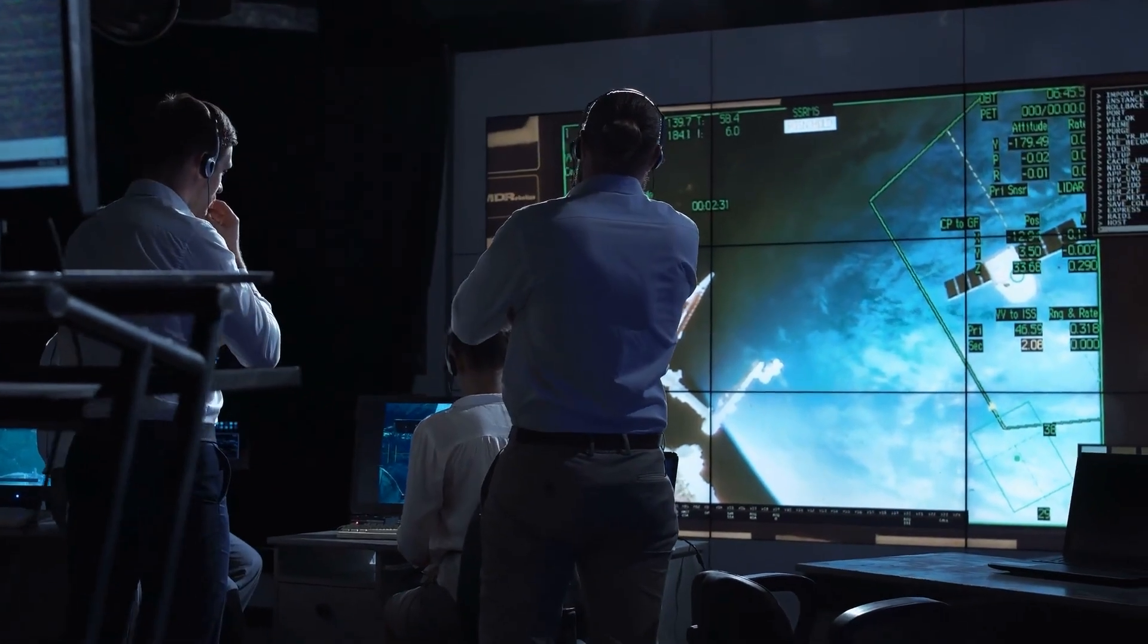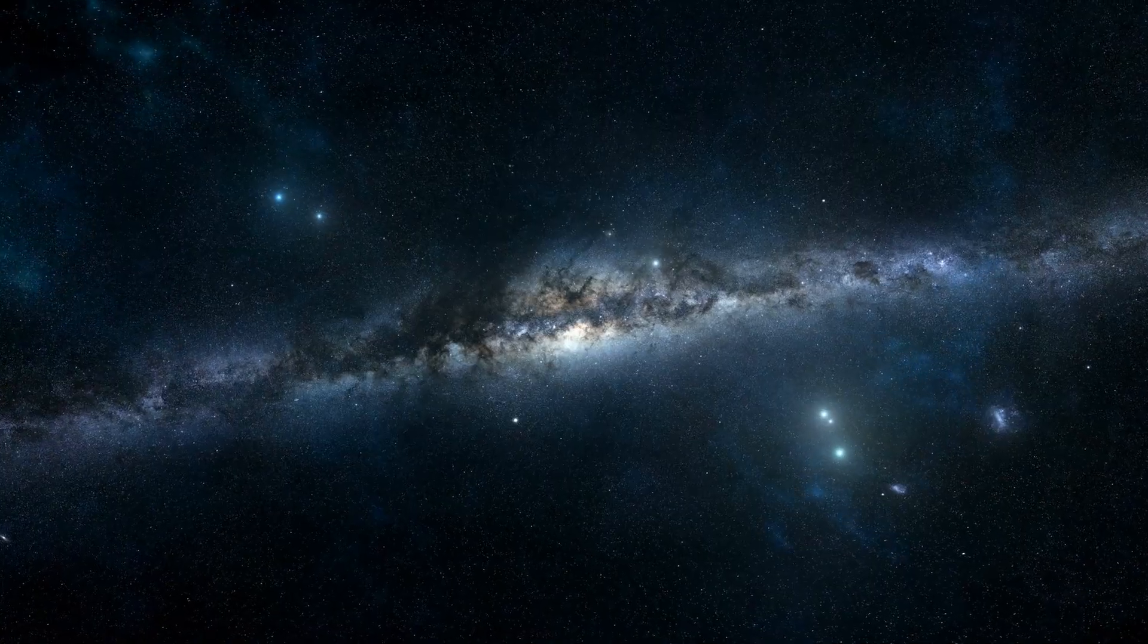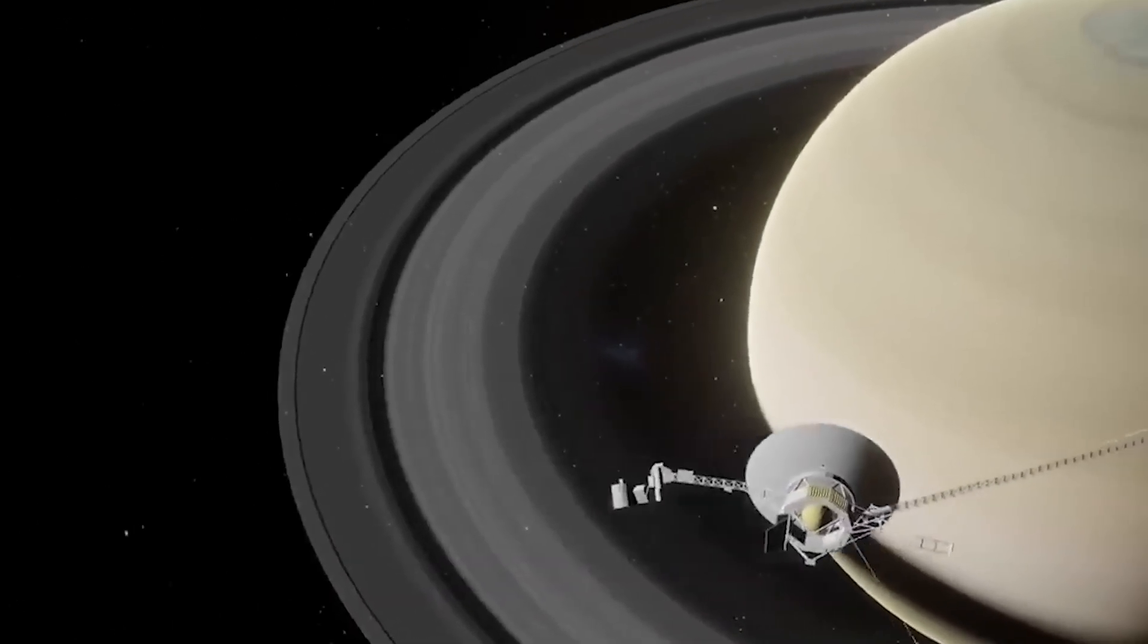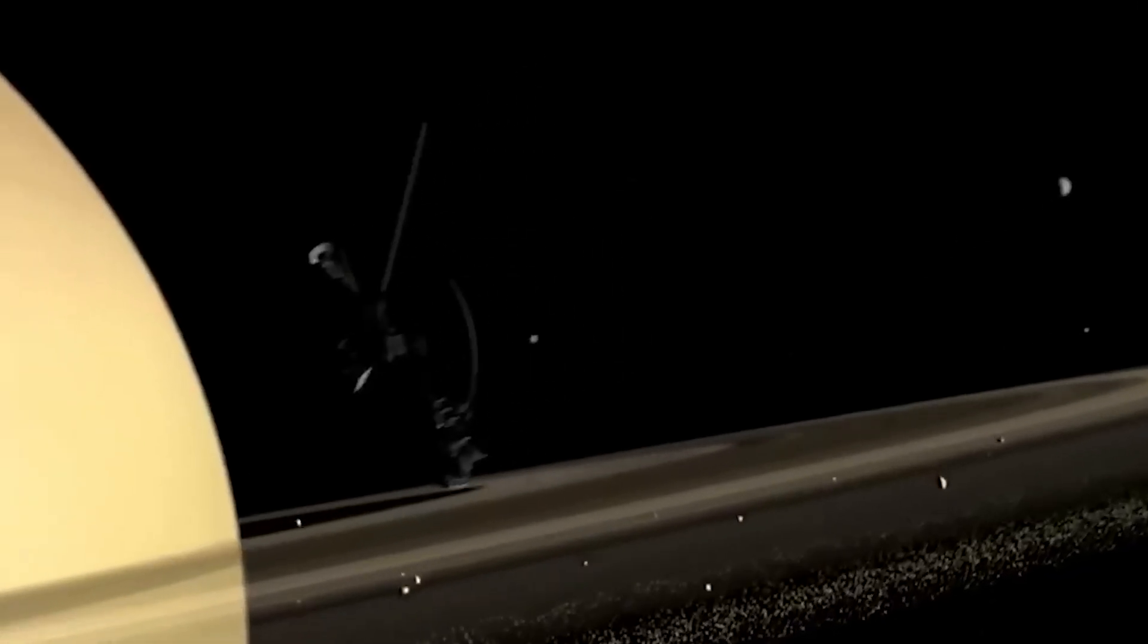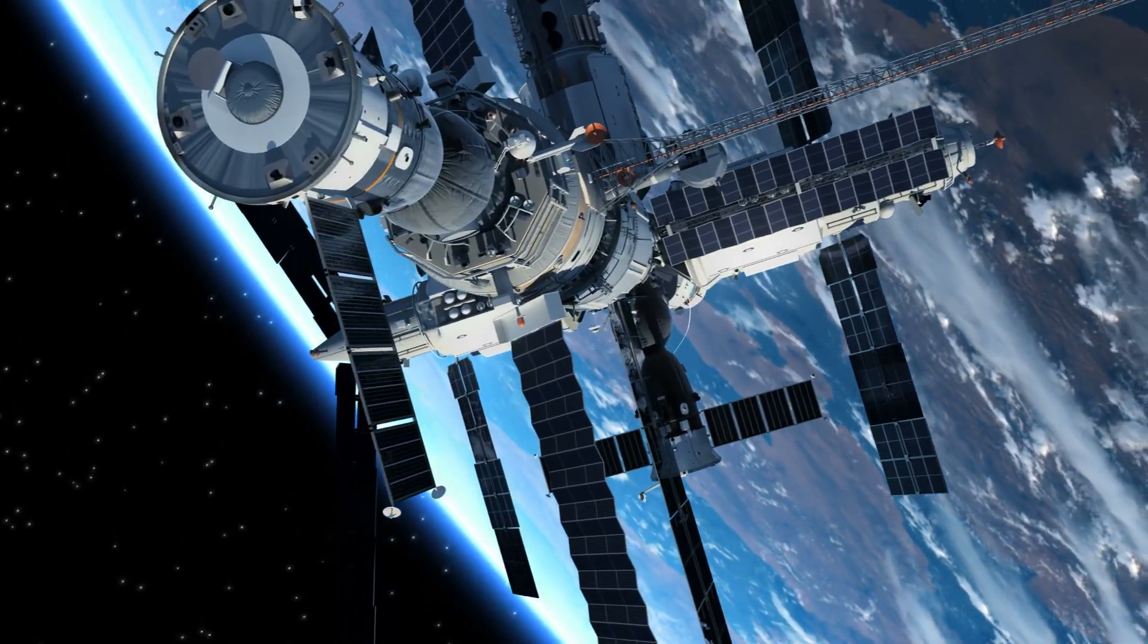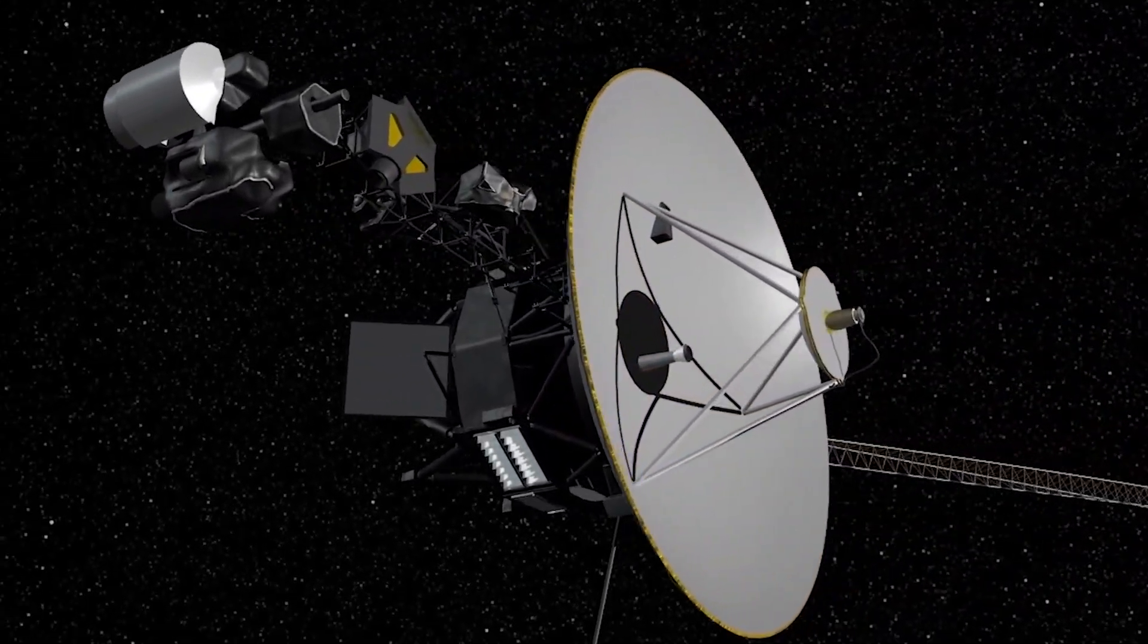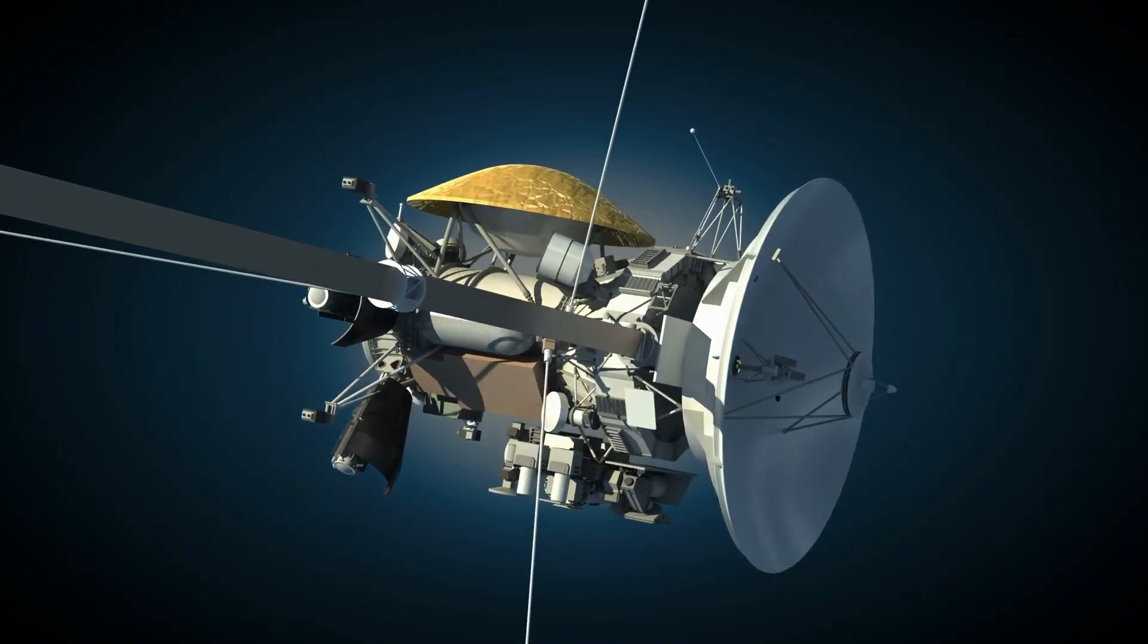The computers in Voyager continue to operate regularly even after the update. The only explanation they can come up with for why it might have changed is if it had come into contact with something that changed the way it sends signals back to NASA. There are two options available: either for the first time in nearly five decades, the Voyager encountered a random fault, or something else fundamentally altered the way it operated.